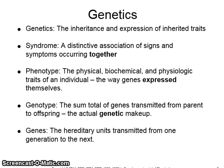Genetics itself means the inheritance and expression of inherited traits. A syndrome is a distinctive association of signs and symptoms which occur together. Phenotype is the physical, biochemical, and physiologic traits of an individual — basically the way genes are expressed, in other words what you see, such as brown eyes versus blue eyes.